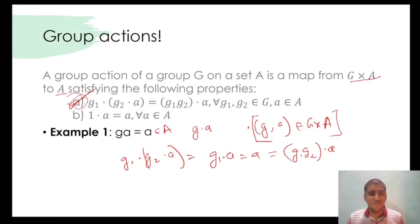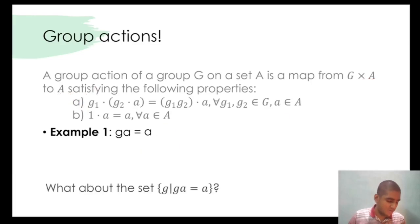Interesting. This is called the trivial action. Now with an example at hand, let's look at an interesting question: what about this particular set G such that GA is equal to A for all A belongs to A? For this example, GA is equal to A for all G belongs to G and for all A belongs to A. Therefore, this set will be nothing but the entire set G itself. Is that so for all group actions?